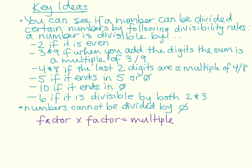So the basic rule is that you cannot divide by 0. The key ideas for this lesson: a number is divisible by 2 if it's even; by 3 and 9 if the sum of its digits is a multiple of 3 or 9; by 4 and 8 if the last two digits are a multiple of 4 or 8; by 5 if it ends in 5 or 0; by 10 only if it ends in 0; by 6 if it can be divided evenly by both 2 and 3; and numbers cannot be divided by 0.